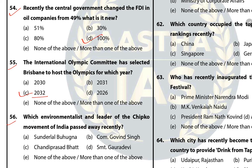Question 56: Which environmentalist and leader of the Chipko movement of India passed away recently? The answer is A — Sunderlal Bahuguna. The Chipko movement was started in 1970 under the leadership of Sunderlal Bahuguna, Gobind Singh Rawat, Chandi Prasad Bhatt, and Srimati Gaura Devi. Sunderlal Bahuguna died on 21 May 2021 in Rishikesh, Uttarakhand.